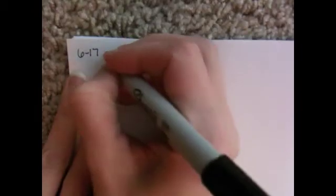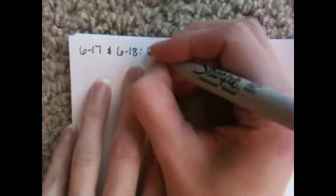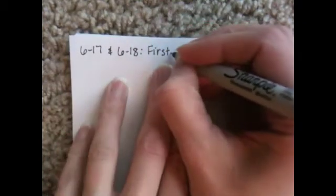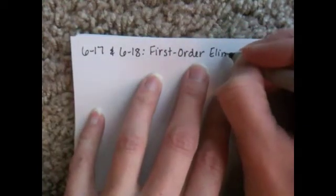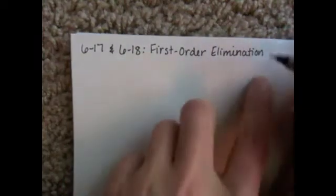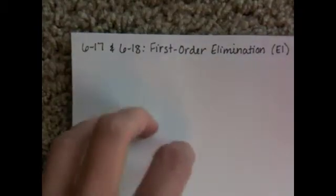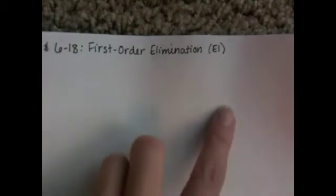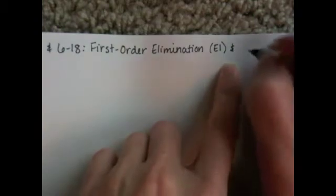We are going to combine sections 617 and 618 together. They are called first order elimination — that's 617 — and first order elimination is a type of reaction abbreviated E1. Section 618 is called Zaitsev's Rule, which pertains to the E1 reaction mechanism.